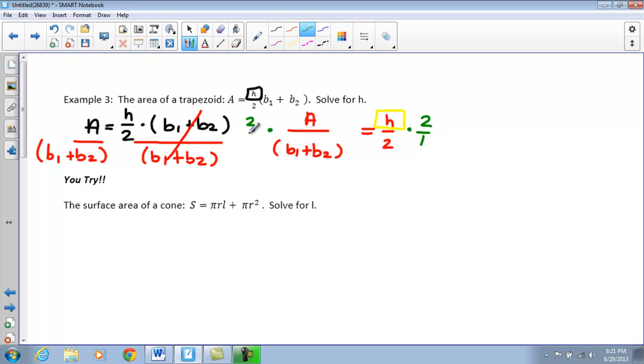So, here these cancel. Now, my H is going to be by itself. When I'm multiplying fractions, I can go ahead and just multiply straight across so that I have as my final answer 2A over B1 plus B2 equals H.